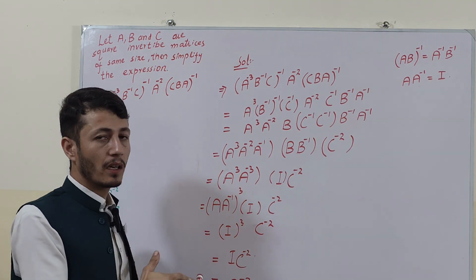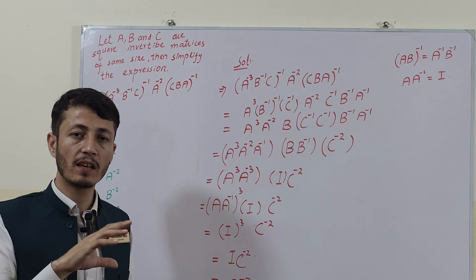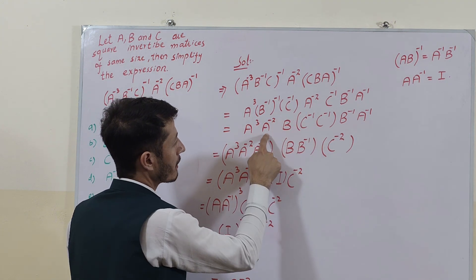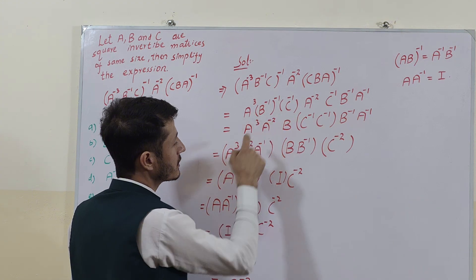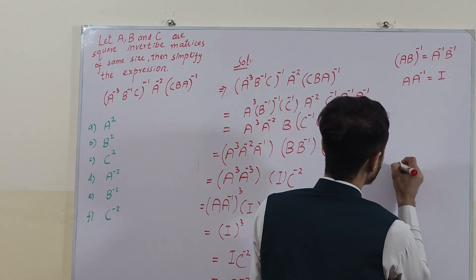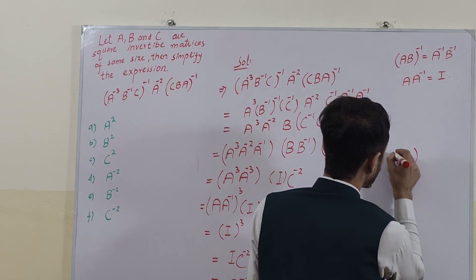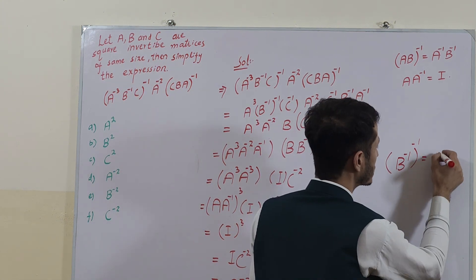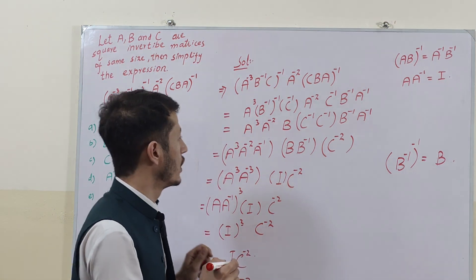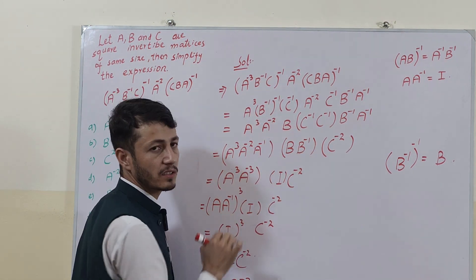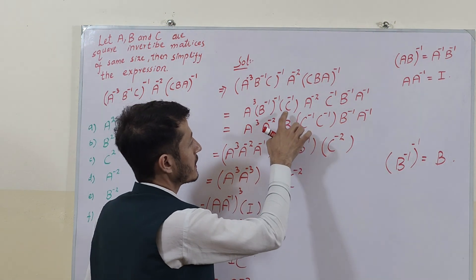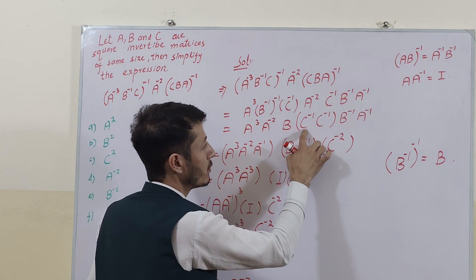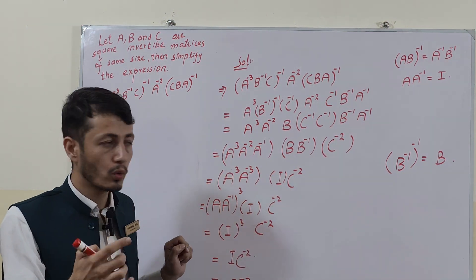By combining the same matrices and their inverses, we can write A^3 and A^(-2). Also, B inverse whole inverse gives us the B matrix. The C inverses combine: one C inverse here and another C inverse, so it becomes C^(-2).